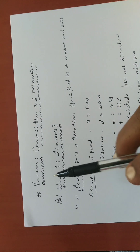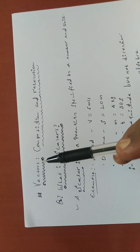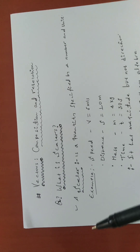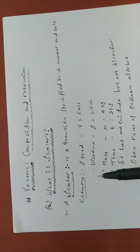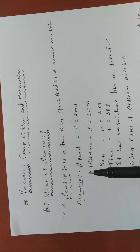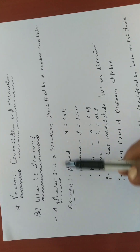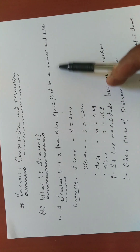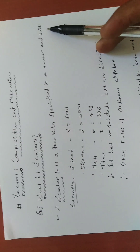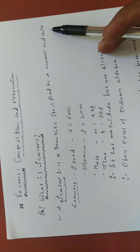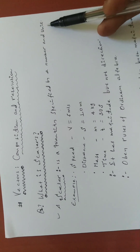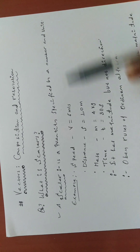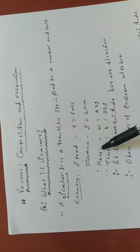First of all, what is a vector? What is a scalar? Let us start with the question: what is a scalar? As you know, in elementary physics, a scalar is a quantity specified by a number and a unit — it is a quantity specified only by a number and a unit.